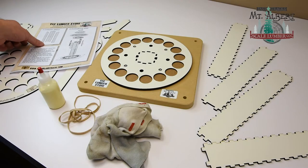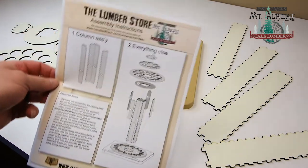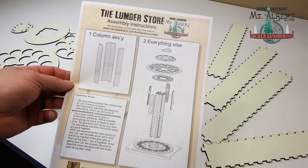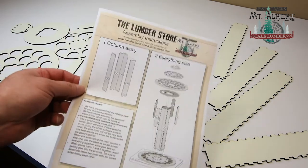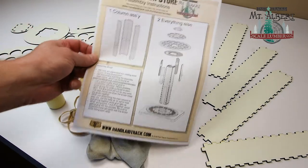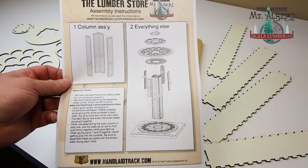I'm going to show you how to assemble a lumber store kit from Mount Albert Scale Lumber. All the laser cut parts in this kit have been designed that they can only be assembled one way only, which makes putting these together quite simple. Included with your lumber store is a nice exploded drawing that will give you all the details on how one of these goes together.